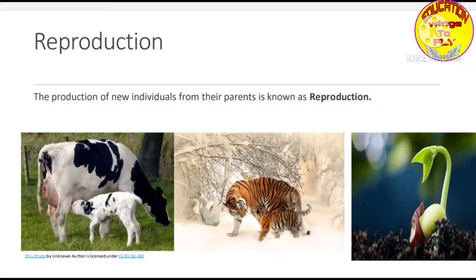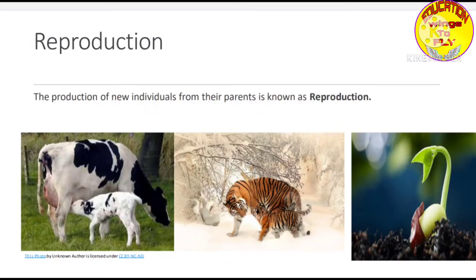You will never see a tiger giving birth to a horse, or a horse giving birth to a dog. This is because when reproduction happens, the baby always belongs to the same species as the parent. Now this reproduction process is very important for all living organisms — from microscopic organisms to very large ones. Every type of living organism needs reproduction. In this chapter, we will learn about reproduction in plants.